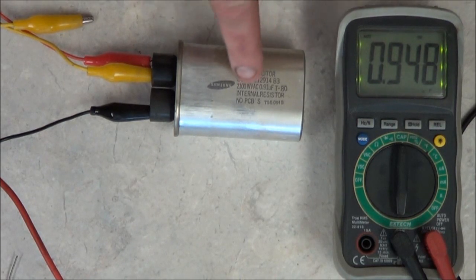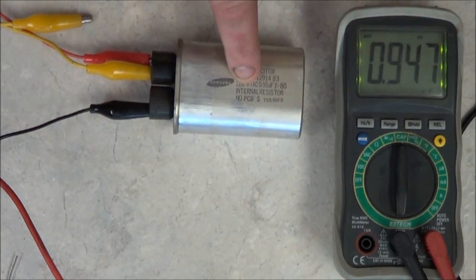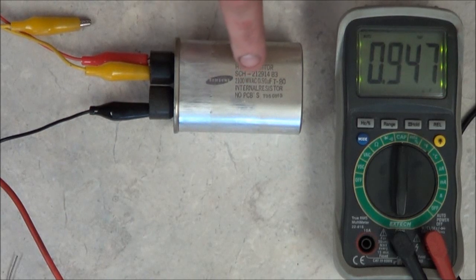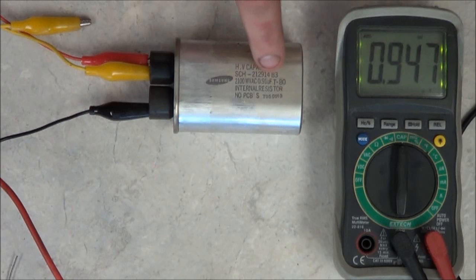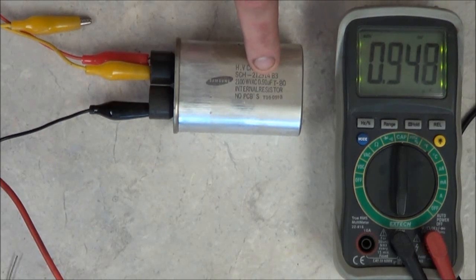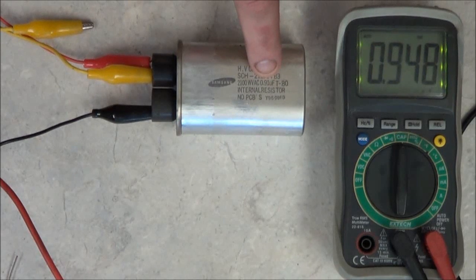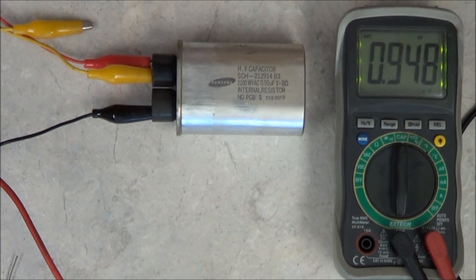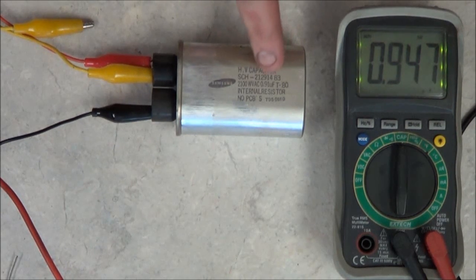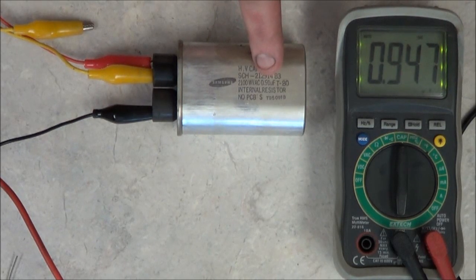Now, if you look at the capacitor, the capacitor will identify the voltage rating, which in this case is 2100 volts AC, and its capacitance should be around 0.91 microfarads. Now, they're going to be off just slightly, but not very much, but it should relatively be close to the stated microfarads that's listed on there.